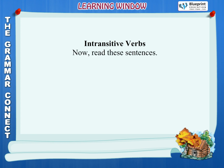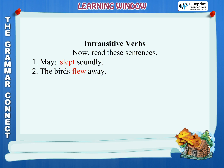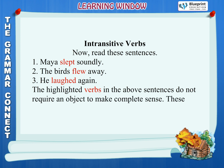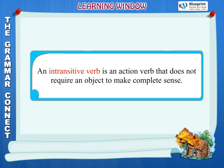The intransitive verb: Now read these sentences — 1. Maya slept soundly. 2. The birds flew away. 3. He laughed again. The highlighted verbs in the above sentences do not require an object to make complete sense. These verbs are called intransitive verbs. An intransitive verb is an action verb that does not require an object to make complete sense.